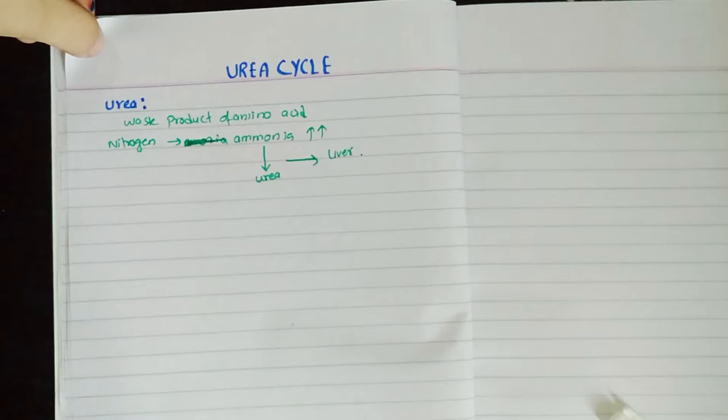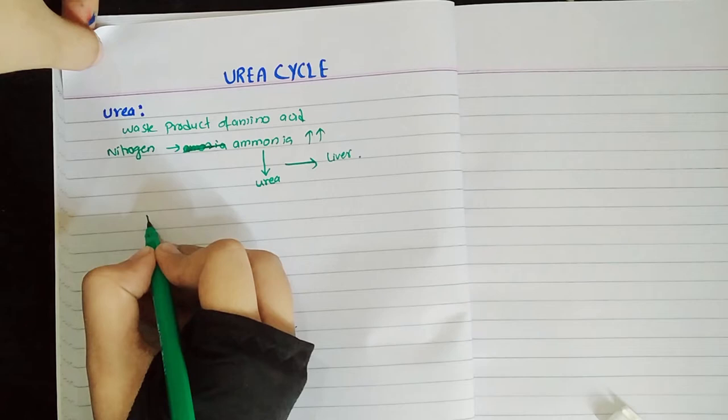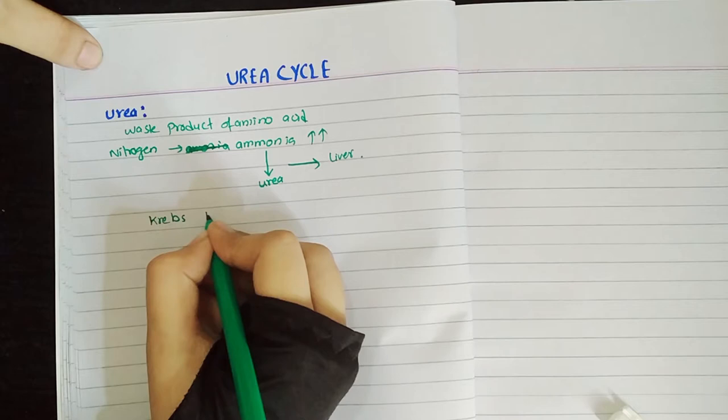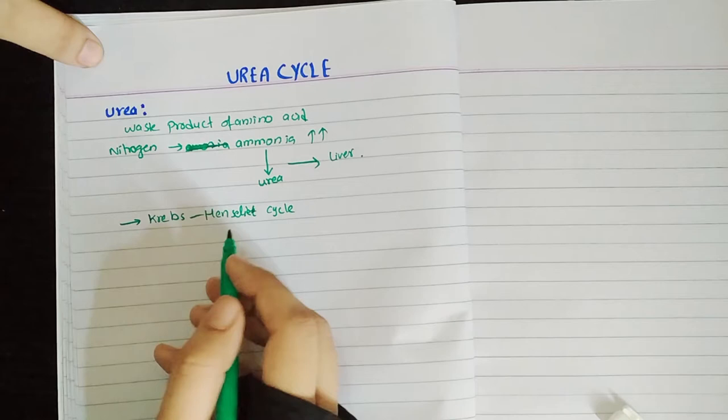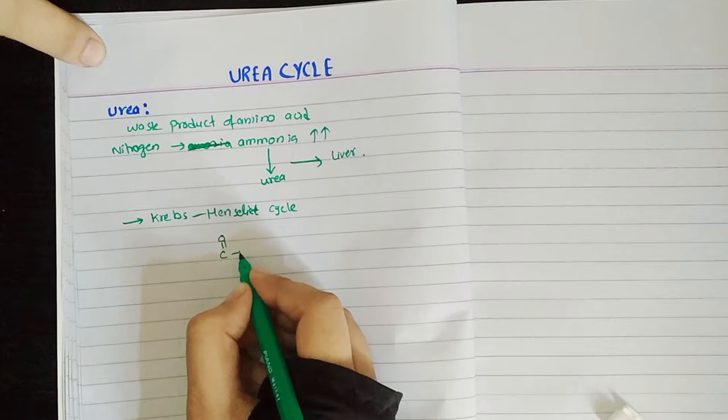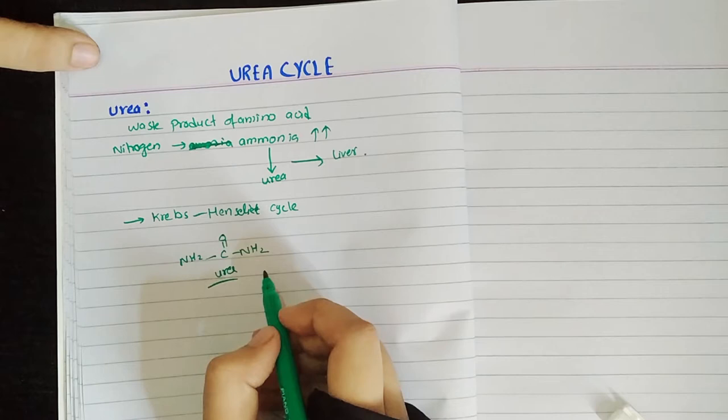The first time it was discovered, it was called the Krebs-Henseleit Cycle. That's why we call this cycle the Krebs-Henseleit Cycle. The structure of urea is CO with two NH2 groups attached.